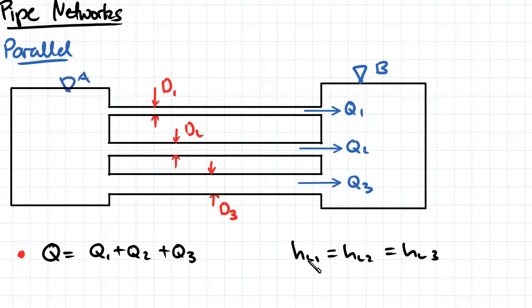What we actually find, which is quite interesting, is that the head loss in pipe 1 and 2 and 3 are all equal to each other, so it's independent of the fact that the pipes may have different diameters. The head loss is going to remain consistent for each of these pipes here.